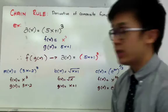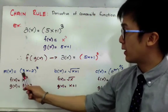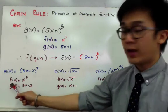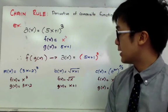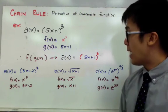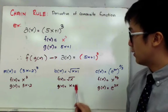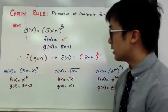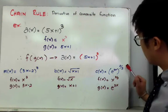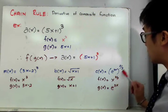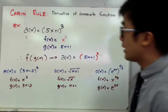Some composite functions you will encounter include m(x) = (3x−2)⁷, where f(x) = x⁷ and g(x) = 3x−2. For b(x) = √(x+1), f(x) is the square root of x and g(x) = x+1. Another example is c(x) = e^(3x) raised to the 2/3 power, where f(x) = x^(2/3) and g(x) = e^(3x).